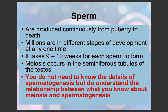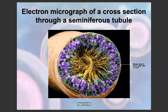For spermatogenesis, you don't need to know it in too much depth, but you must understand the relationship between meiosis and spermatogenesis. Sperm are produced continuously from puberty until death, with millions in development at any one time — all in different stages, being produced, stored, and released. It usually takes about nine to ten weeks for each sperm to form. Meiosis takes place in the seminiferous tubules of the testes. You can see in the seminiferous tubule diagram how many millions of sperm there are, with immature sperm on the outside and more mature sperm on the inside.